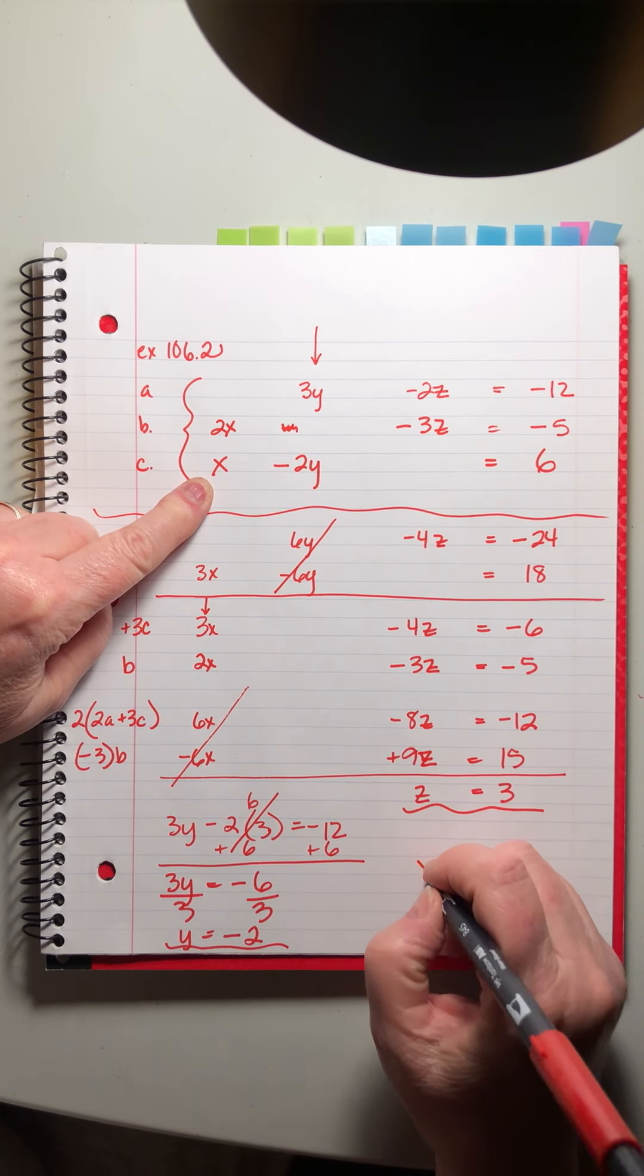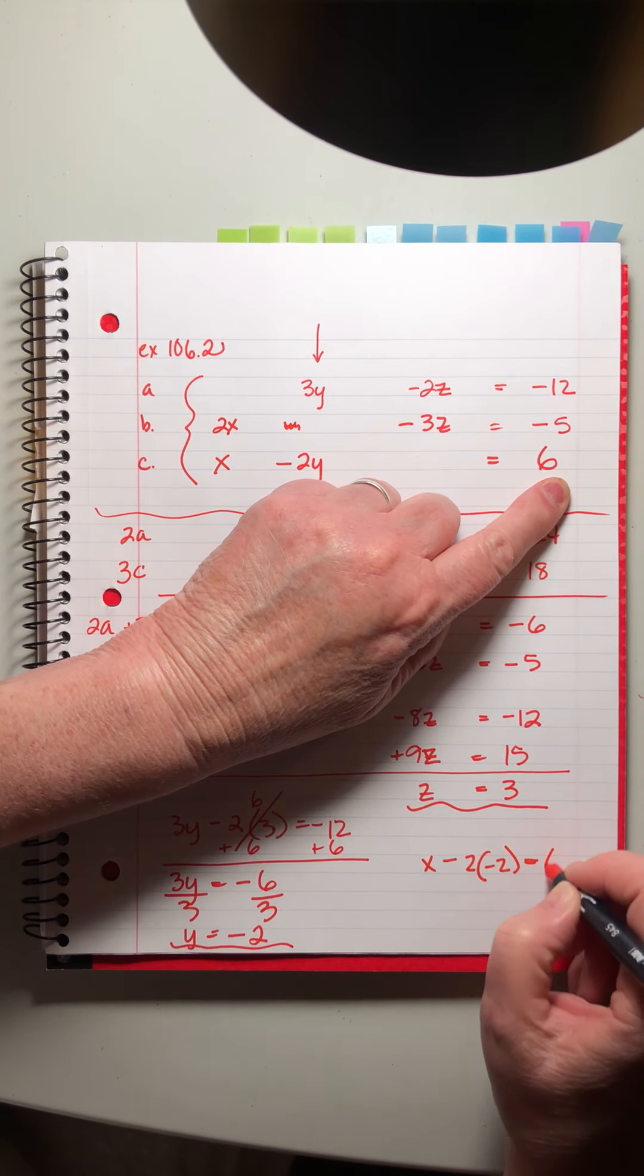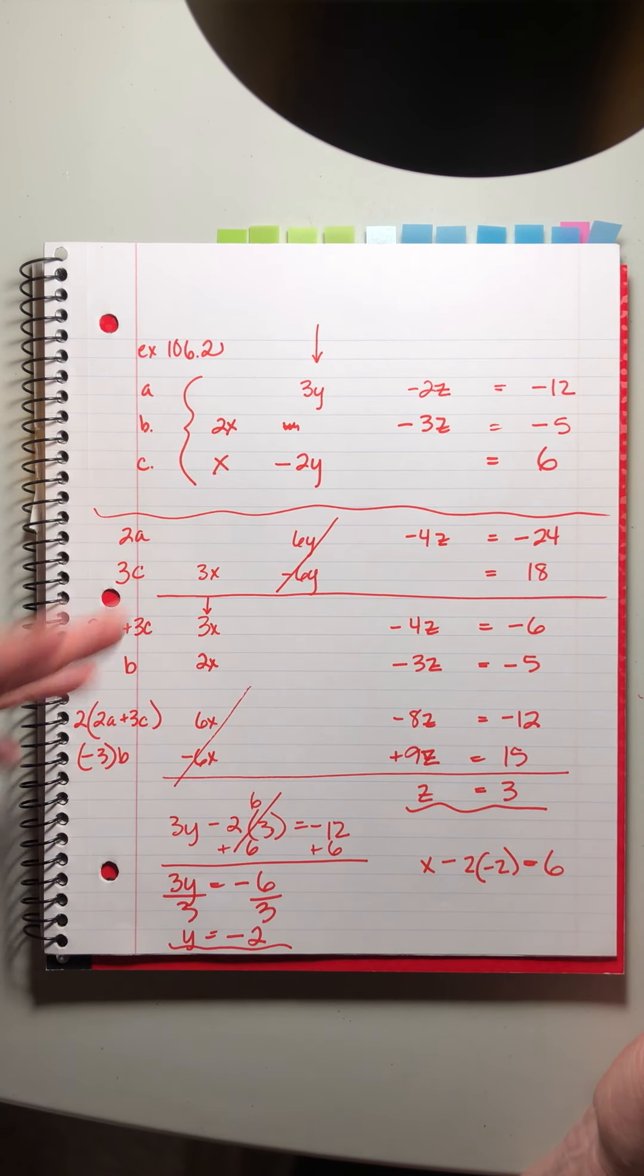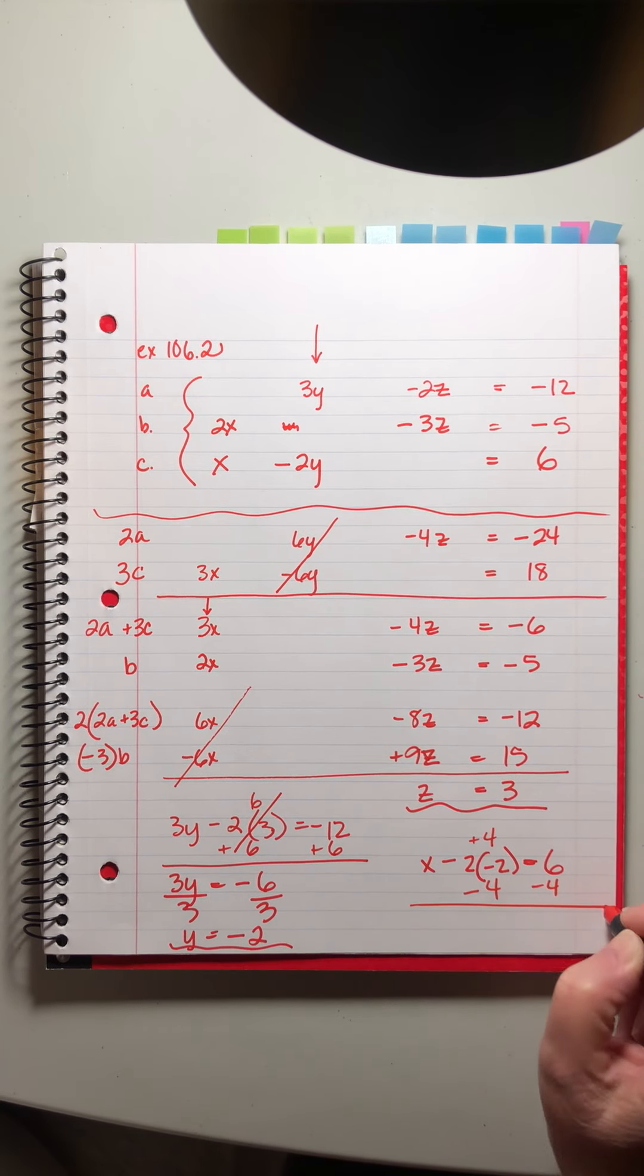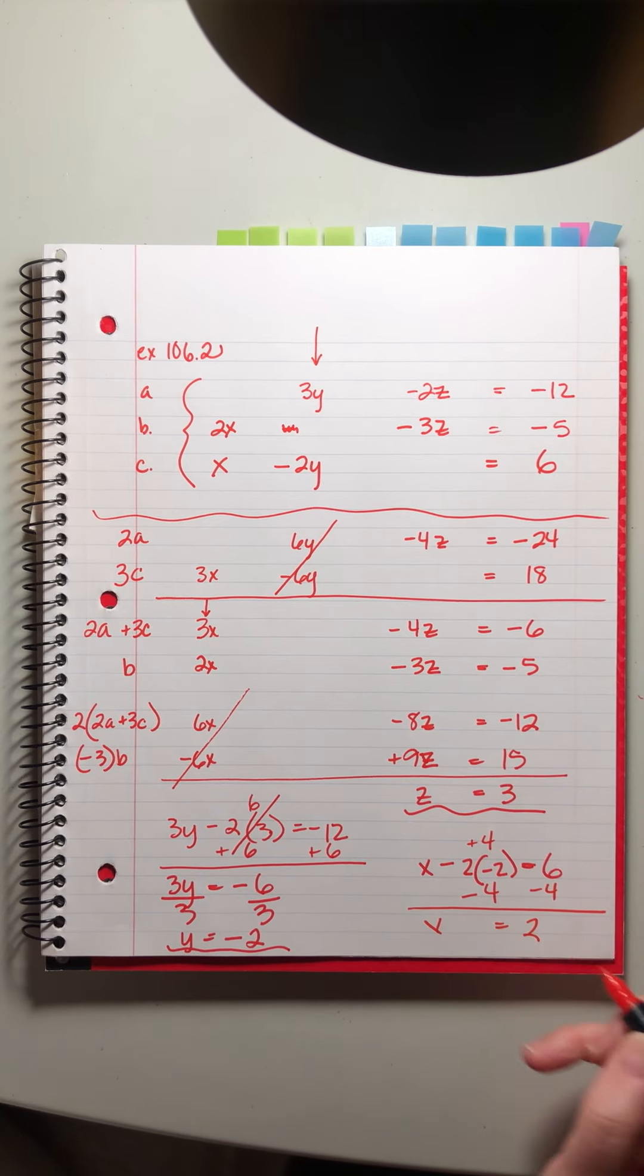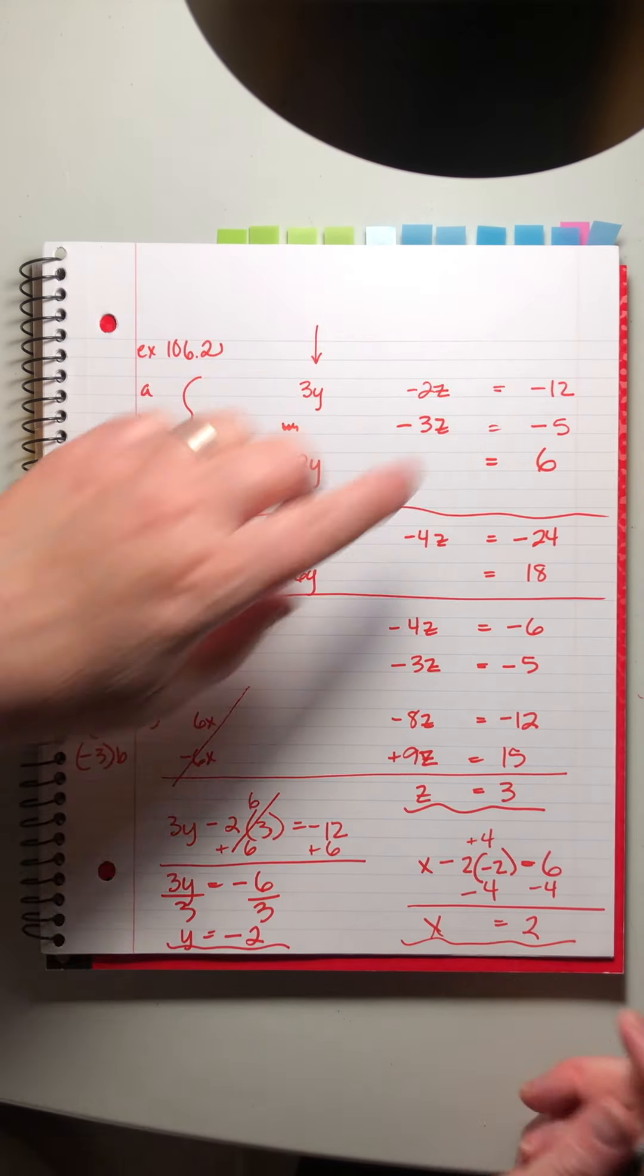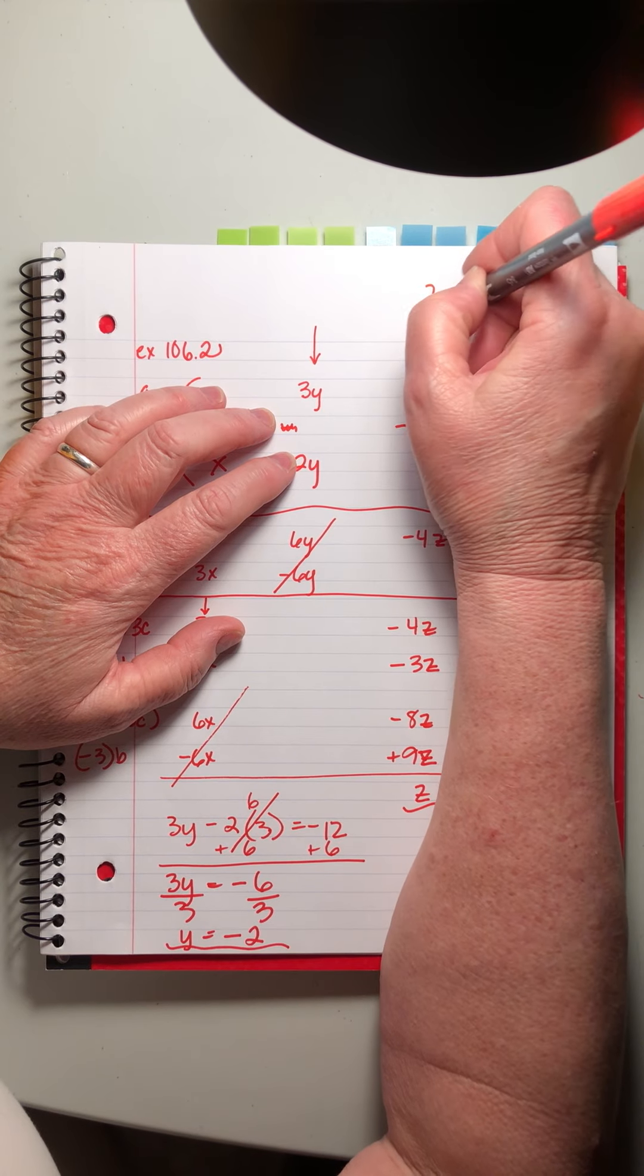Okay. And now I need to solve for x. I really like this one for x. x minus 2 times negative 2 equals 6. Again you can use any of the equations that we've created. Any of them. You're just looking for the right combination of letters. But I like to try to keep the numbers simple if I can help it too. All right. This is positive 4. So we're going to have to subtract 4 from both sides. x equals 2. Look it worked out. We didn't have to do any division on this one either. So my final answer is 2, negative 2, 3. That's my ordered triple.